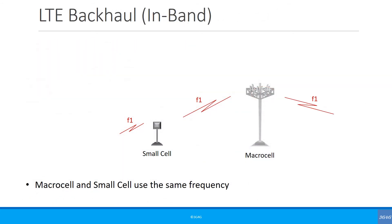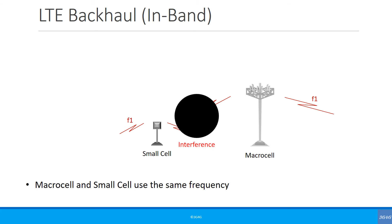Another kind of backhaul is LTE backhaul. In in-band backhaul, the macrocell transmits on frequency F1, the small cell receives F1 and also transmits on F1, basically extending the coverage area. The small cell must have a directional antenna so it transmits in an area that does not interfere with the macrocell. If it transmits omnidirectionally, transmissions from the macrocell and small cell would interfere with each other, making the small cell potentially unusable.